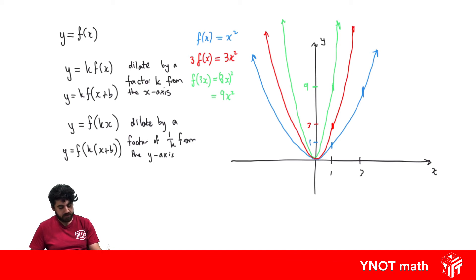Our first dilation: by multiplying the whole function by a factor of k, it dilates by a factor of k from the x-axis. This is our red function here. We can see that by multiplying the whole function by 3, from the x-axis, the original function was one unit away and now the new function is three units away in the same spot for x. We've stretched out by a factor of 3 from the x-axis.